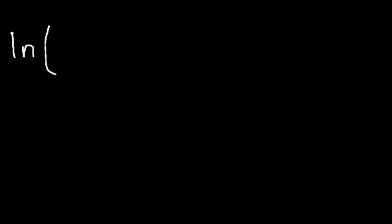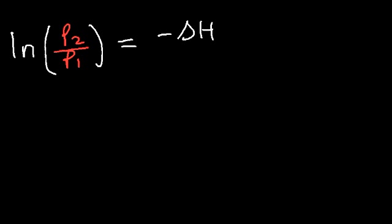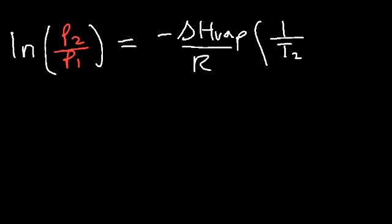You're probably familiar with this form of the equation: the natural log of the second vapor pressure divided by the first, which is equal to negative the enthalpy of vaporization divided by R, times 1 over T2 minus 1 over T1.